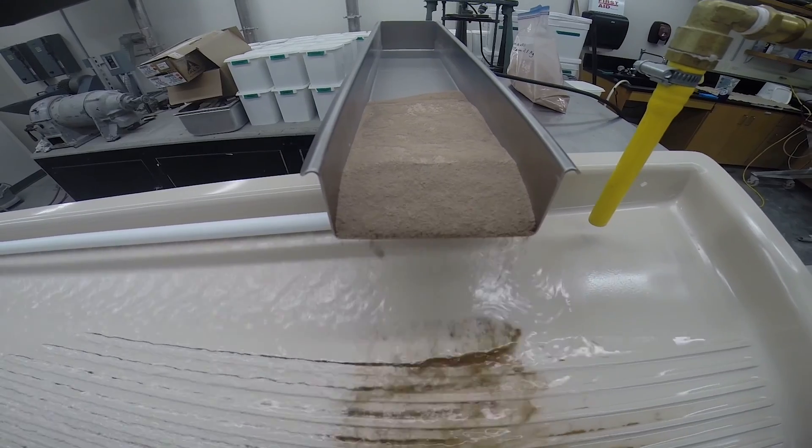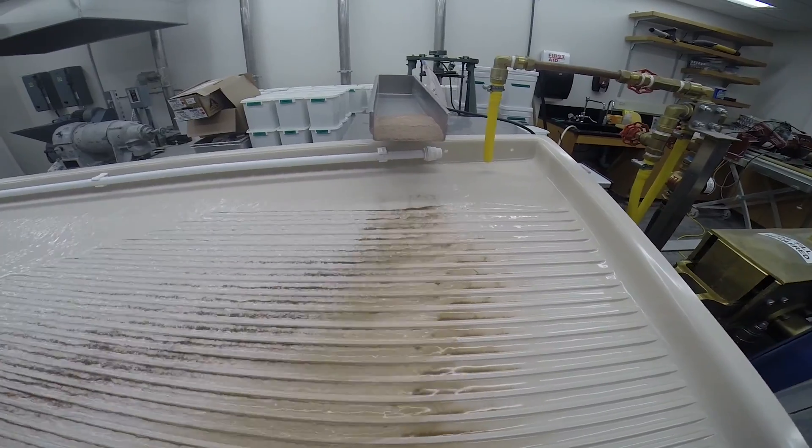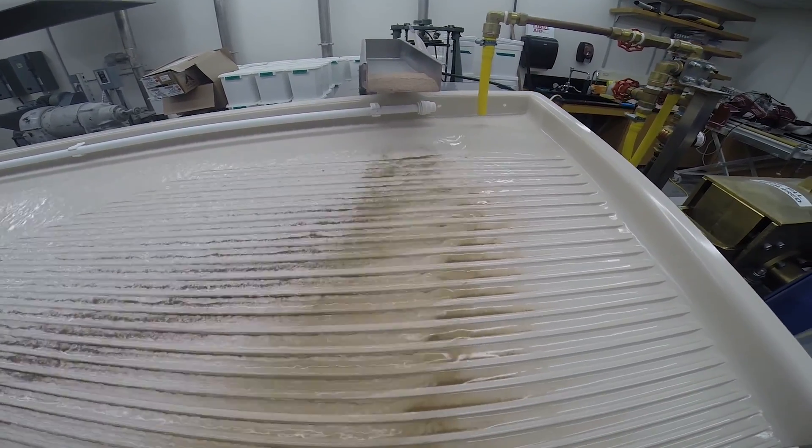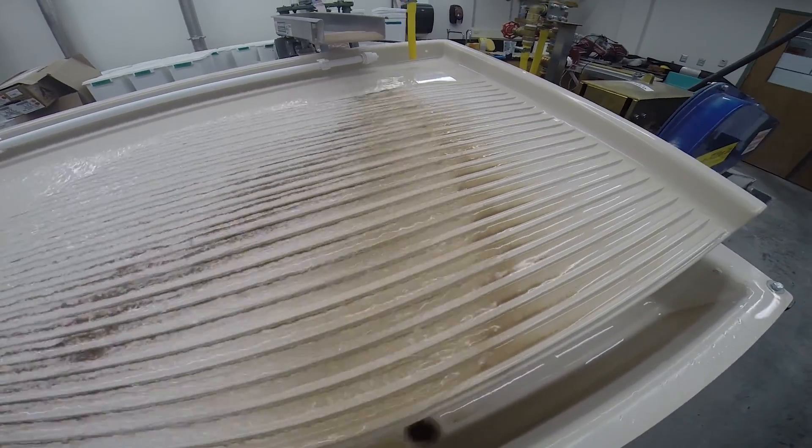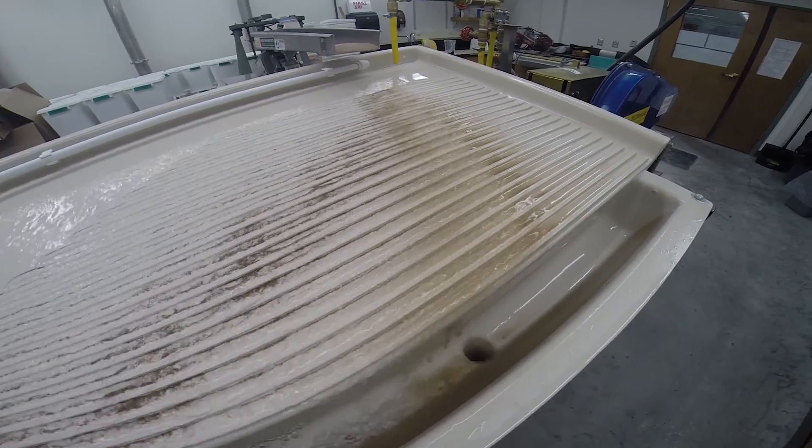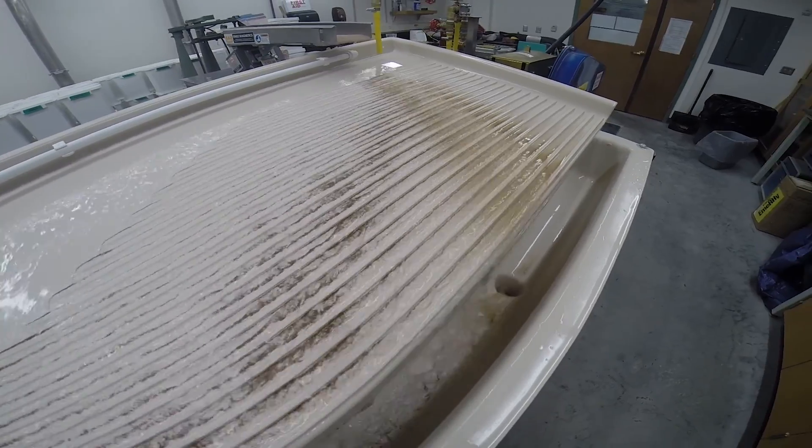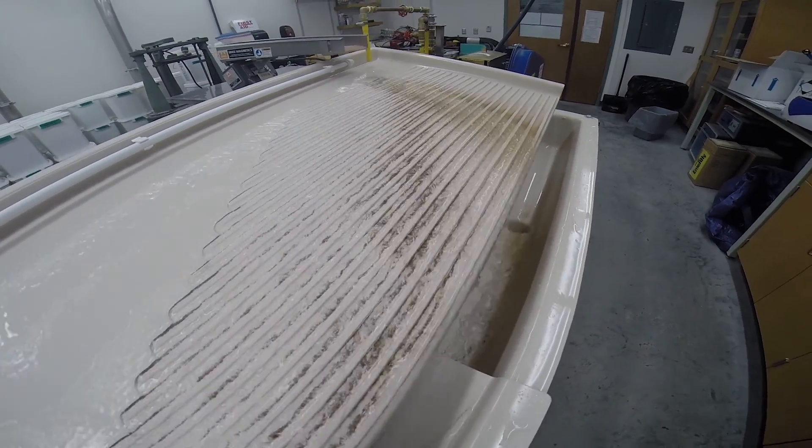The first step in the process is a Wilfley table. Another property of our amazing zircon is that it is very dense, on average about two times as dense as most common minerals. To take advantage of this property, we pour the rock powder onto this slanted, wet, shaking table.